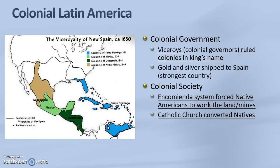Once these areas were conquered and under the control of the Spanish, governments needed to be set up, so these colonial governments were led by viceroys — the governors who were sent by the Spanish king to rule in the king's name. They extracted all of the gold and silver from this land and shipped it to Spain, which then became the strongest country in Europe as a result. The encomienda system is the labor system of the colonies that forced Native Americans to work the land and mines. However, the encomienda system was not successful because the Native Americans were not immune to diseases or died from the harsh conditions. During this time many missionaries also came to the colonies to convert the natives to Catholicism.